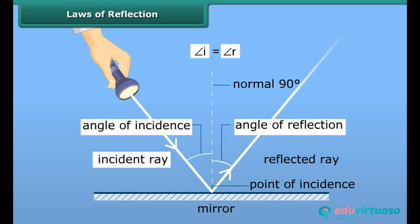The incident ray, the normal at the point of incidence, and the reflected ray all lie in the same plane.